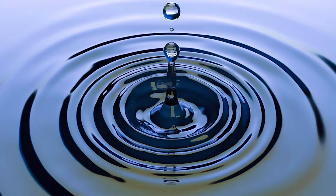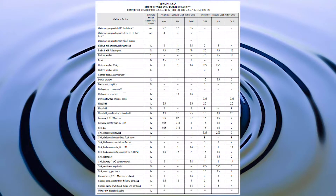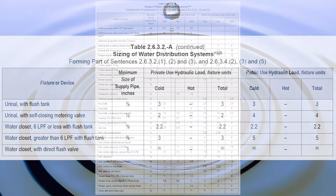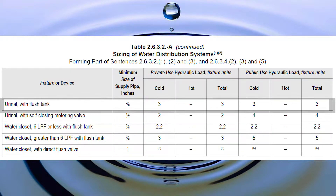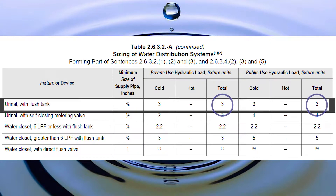In the previous waterline sizing videos we went through how to use table 2632A in your plumbing code, so I'm not going to go through that again — we're just going to be referencing it. If we look down in table 2632A we're going to notice that a urinal with a flush tank is rated at three fixture units.